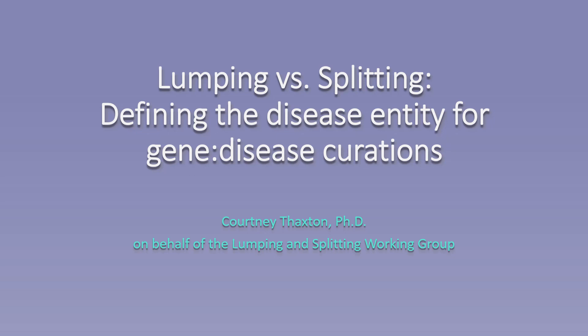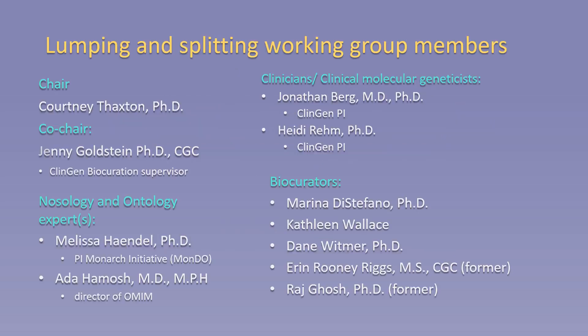This training video is to review the guidelines developed by the ClinGen Lumping and Splitting Working Group to assist biocurators in defining the most appropriate disease entity or entities to curate for any given gene. The Lumping and Splitting Working Group was formed in April of 2017 and is comprised of clinicians and diagnosticians, nosological and ontological experts, as well as biocurators.